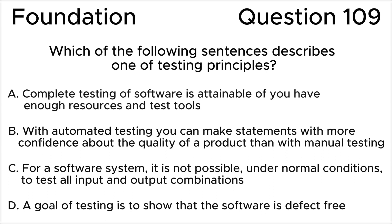ISTQB foundation level question 109: which of the following sentences describes one of the testing principles? A: Complete testing of software is attainable if you have enough resources and test tools. B: With automated testing you can make statements with more confidence about the quality of a product than with manual testing.